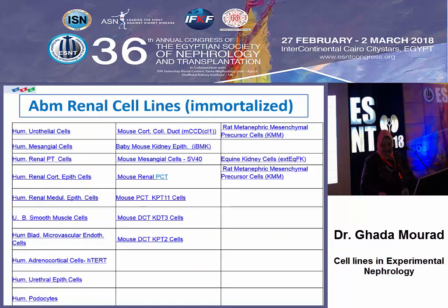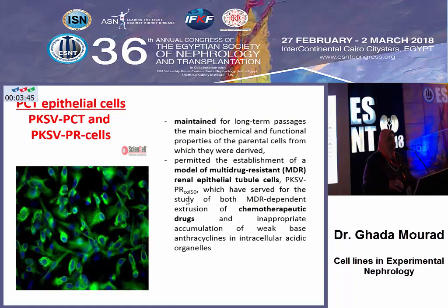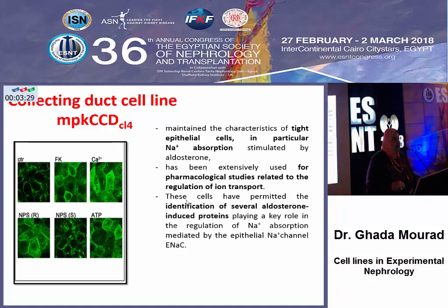Today we have suppliers mainly concerned with the selling of cell lines. For example, human proximal epithelial cells are good models for studying metabolism and energy depletion. More specialized normal cell lines are derived from the convoluted as well as from the straight portions of the proximal tubules and these have been used effectively for studying drug resistance, particularly chemotherapeutic drugs. Novel cell lines include collecting duct cells used for studying aldosterone-dependent cells and the mechanisms explaining regulation of ion transport.